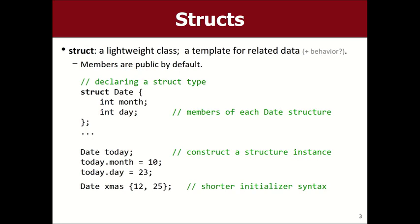We just talked about classes — classes have variables and methods inside, data and behavior. A struct is basically a class, but usually for a small thing with one or two pieces of information and mostly just data, not much behavior. For example, here's a simple structure type for dates that stores a month and a day. That declares a new type, so now you can make date objects and set their dot-month and dot-day. It's like a class, except the member variables are public rather than private.